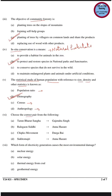The next question: choose the correct pair from the following. Four pairs are given — Tarun Bharat Sangh and Gajendra Singh, Rale Gaon Siddhi and Anna Hazare, Chipko Movement and Durga Bhabi, and Sukho Majari and Anna Hazare. The correct pair for Tarun Bharat Sangh is Rajendra Singh. Chipko Movement is associated with Sundarlal Bahuguna, and Sukho Majari is a model of community participatory management.